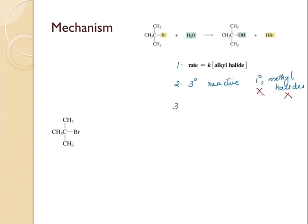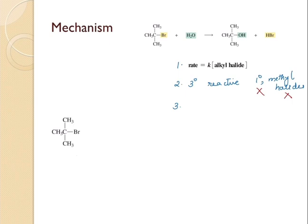Finally, they also found out that when they did the substitution reaction with an alcohol halide where the halogen is connected to an asymmetric center, it resulted in two stereoisomers — one with the same relative configuration as that of the initial alcohol halide, and the other one with an inverted configuration.